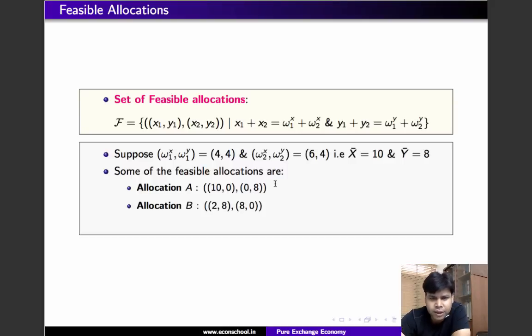Allocation B, that's another example of a feasible allocation. In this allocation, individual 1 consumes 2 units of x, 8 units of y, and individual 2 consumes 8 units of x and 0 units of y.